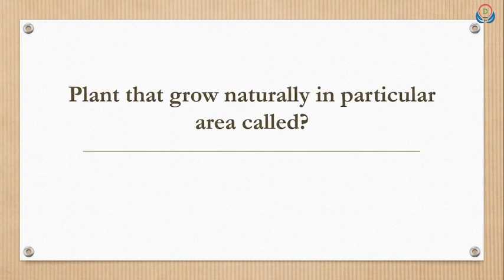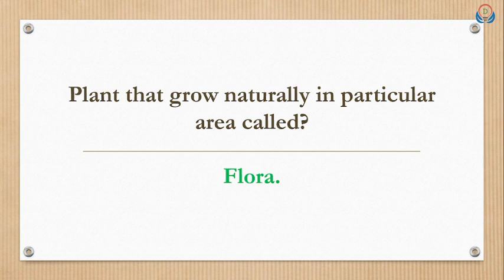Plants that grow naturally in a particular area are called what? The answer is flora. So plants that grow in a particular area — the name for them is flora. This question is likely to come in exams.